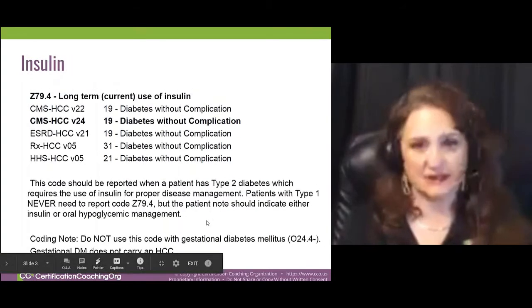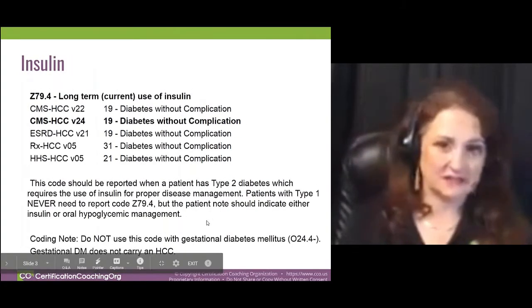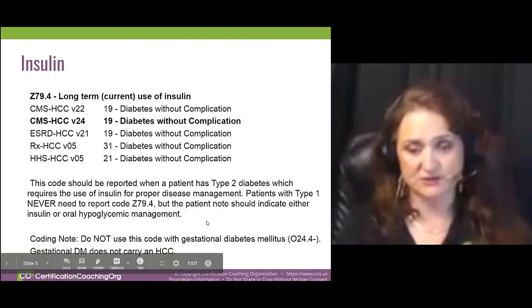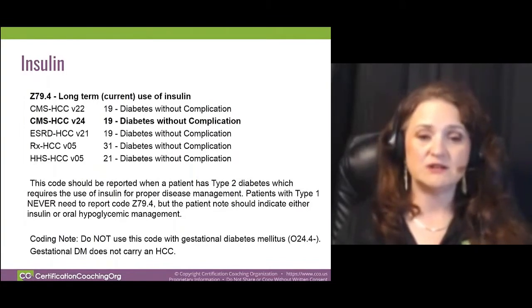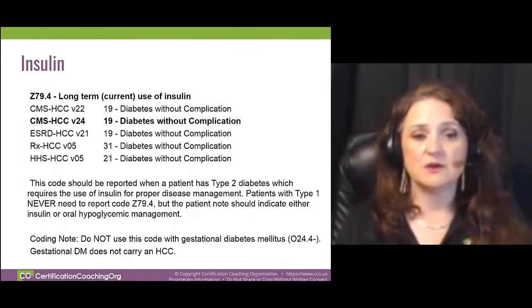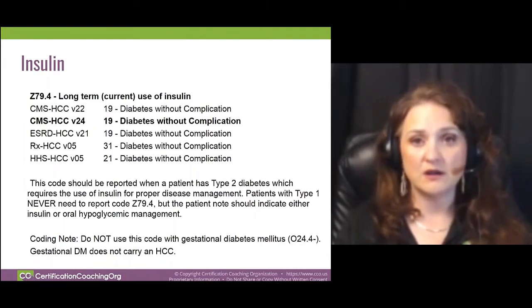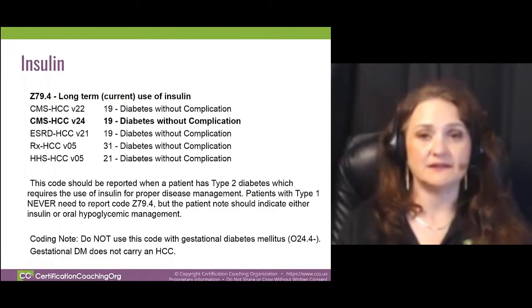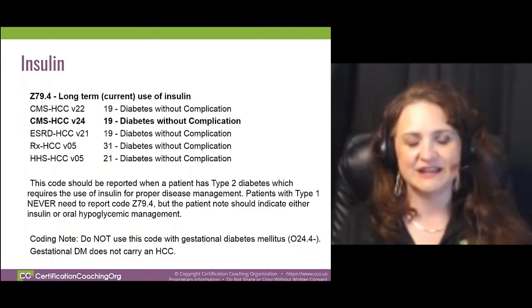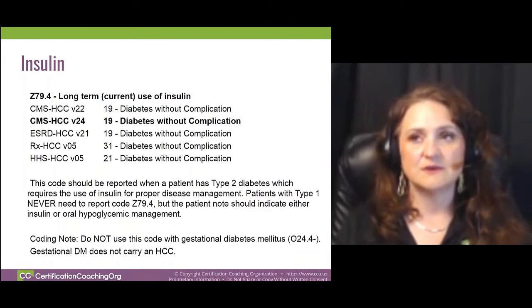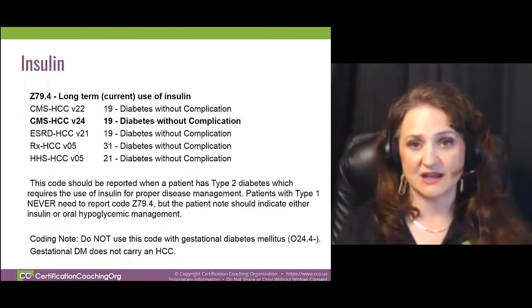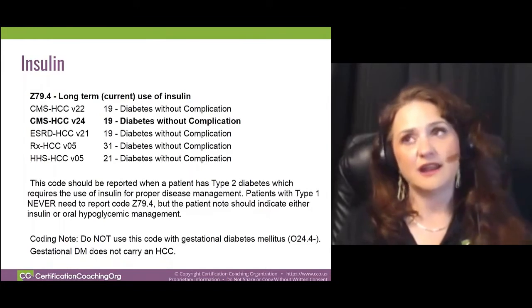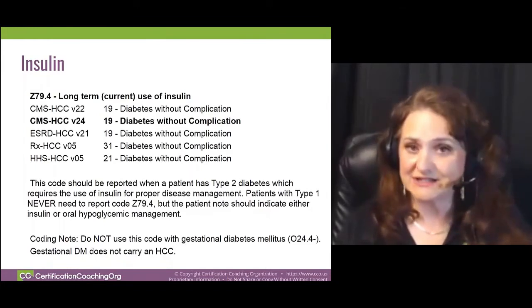Whenever a person has type 1 diabetes, they have to take insulin — it's a congenital disorder, their body doesn't produce enough insulin. So if a person is a type 1 diabetic, we don't think about capturing Z79.4 for long-term insulin use, because it's redundant. Plus, it carries the same HCC as other diabetes codes. As you saw, type 2 diabetes is HCC 19, and long-term insulin use is also HCC 19.